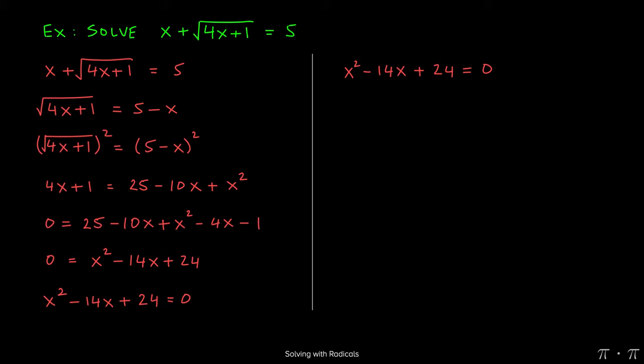Now this equation can be solved by factoring. It's a quadratic. The leading coefficient is 1, so we can use the AC method. So factors of 24 that add up to negative 14 are negative 12 and negative 2. So those are the factors I use.